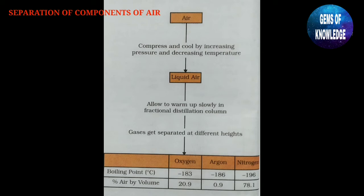The compressed and cooled air is converted into liquid air, which is then allowed to warm up slowly in a fractional distillation column. The gases separate at different heights and different boiling points: oxygen at -183°C (20.9%), argon at -186°C (0.9%), and nitrogen at -196°C (78.1%).